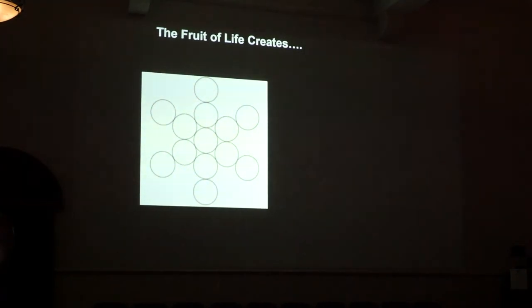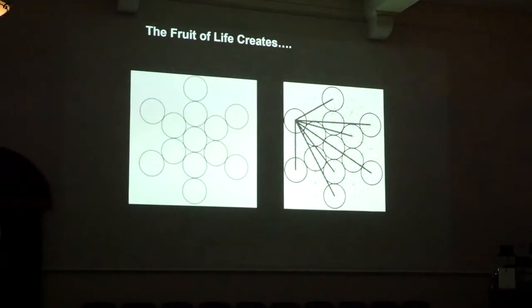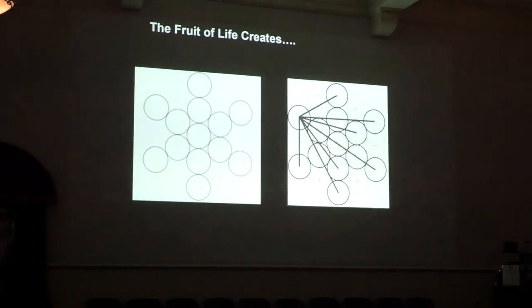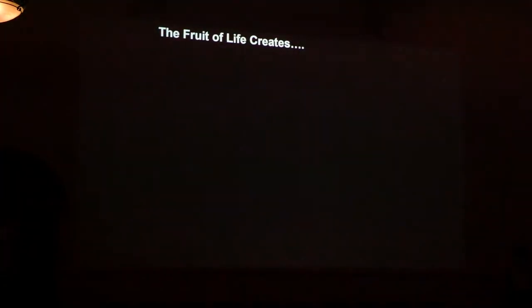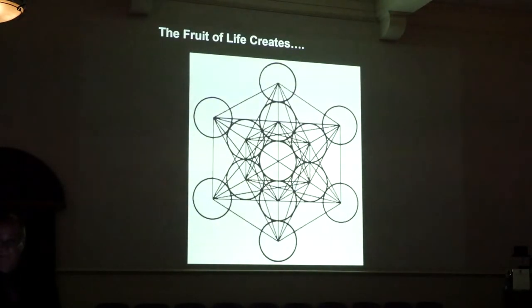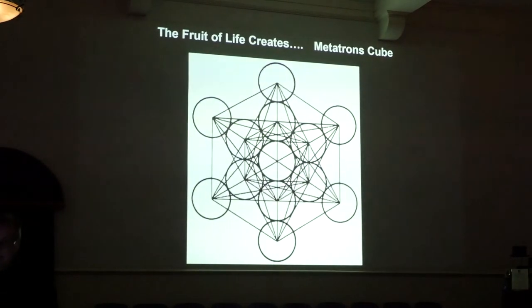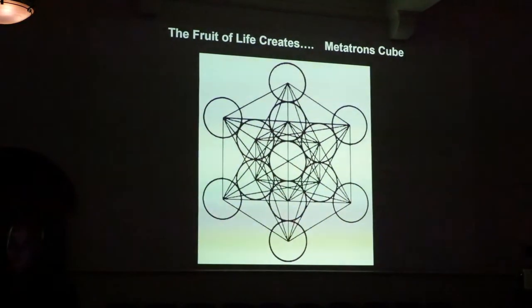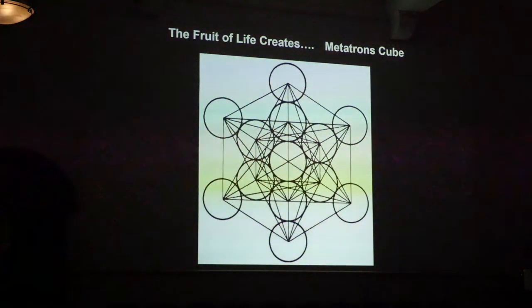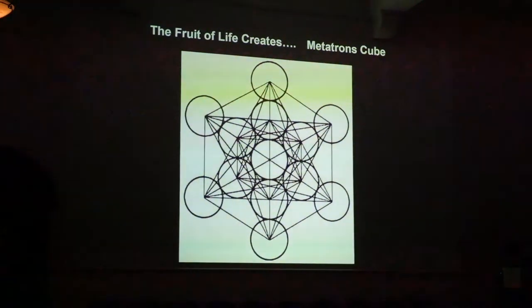If you draw a line from the center of every sphere to the center of every other sphere, you get a very special shape. Does anybody know what it's called? It's actually called Metatron's Cube. Metatron's Cube actually brings forth all of the Platonic solids. Archangel Metatron is actually considered in esoteric literature to be the voice of God, one or if not the highest archangel, and is depicted in ancient texts with an image of this cube that bears his name emblazoned on his chest or floating around him.